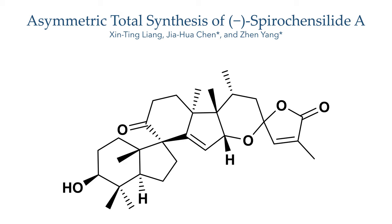Today we are going to look at the asymmetric total synthesis of Spirochensylide A, which was published by the Yang group. This synthesis is quite long and very challenging, and the group has published two further papers on the methodology developed, which I highly recommend checking out.